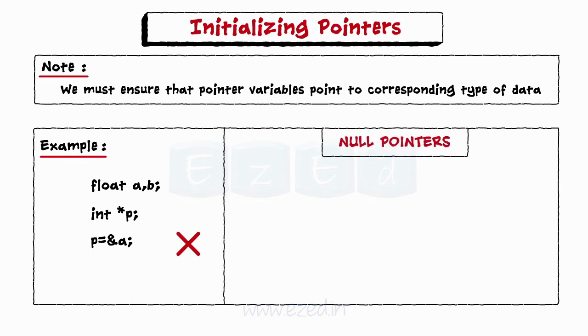We can define a pointer variable with an initial value of null or zero. We cannot assign a constant value to a pointer variable.